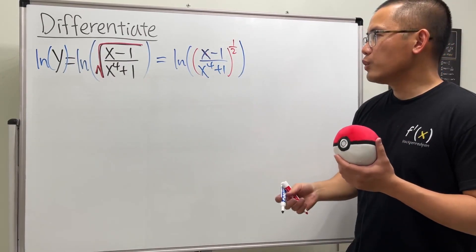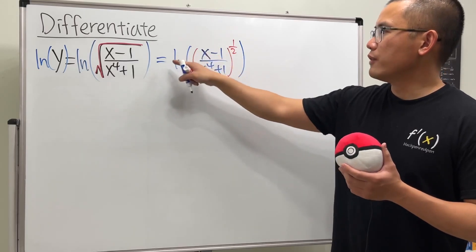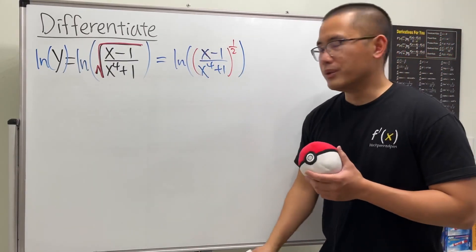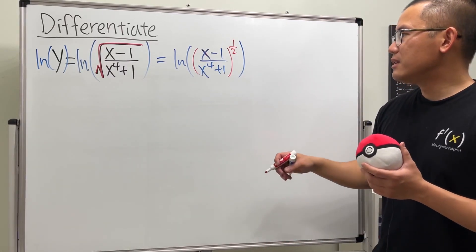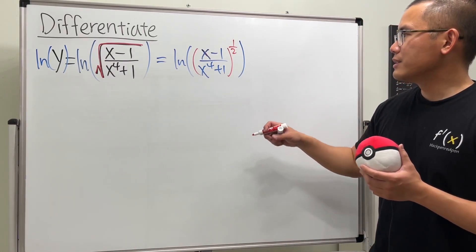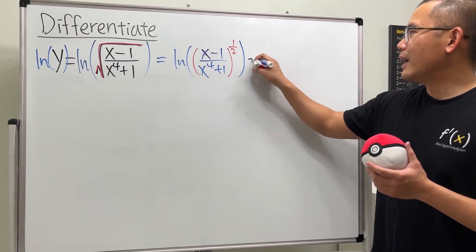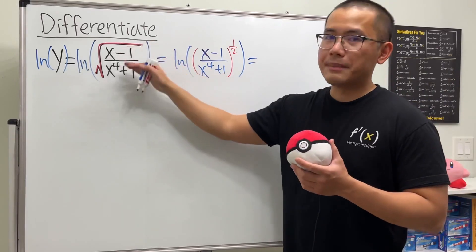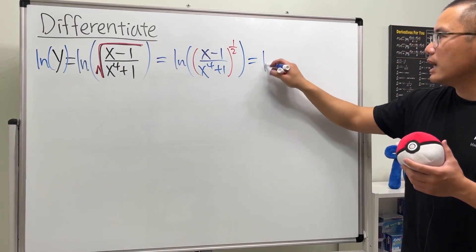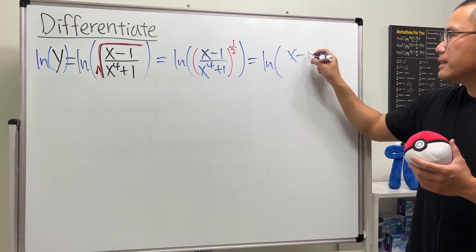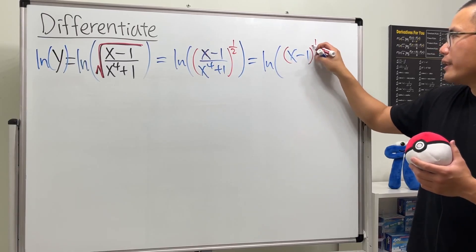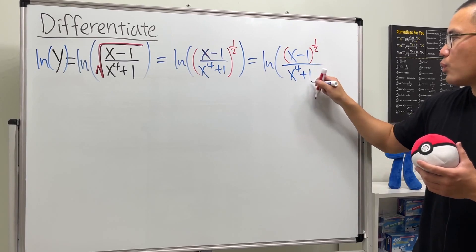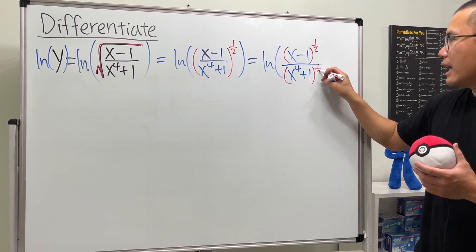You can bring the one-half to the front first. I will put the one-half on the top and one-half on the bottom — it's like saying square root on the top, square root on the bottom. So this is ln of x minus 1 to the one-half power over x to the fourth power plus 1 to the one-half power.